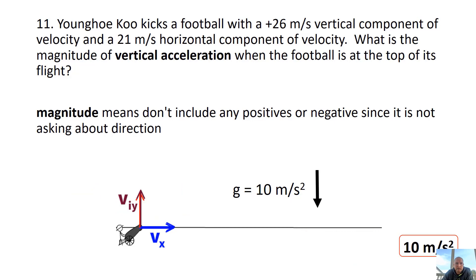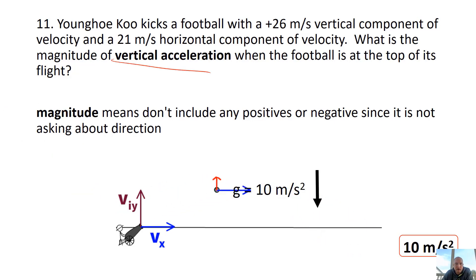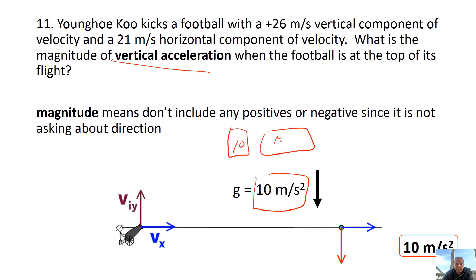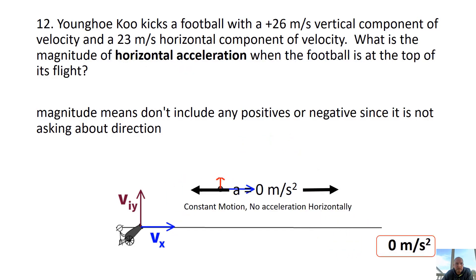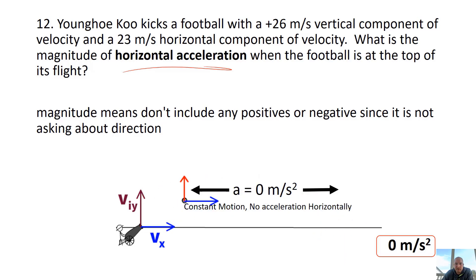Problem 11: Vertical acceleration — here I'm asking for magnitude, so I don't want the negative or 'down.' The answer is 10 meters per second squared. On E-class, it's 10 meters per second per second. Problem 12: Horizontal acceleration — there is none, so the answer is zero meters per second squared. Constant motion means no acceleration.